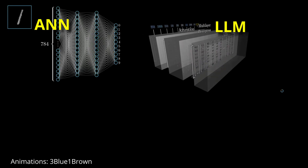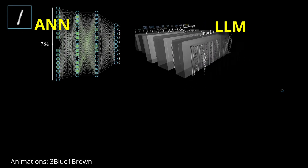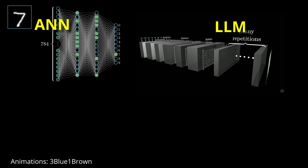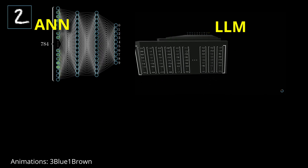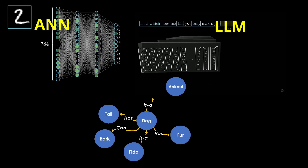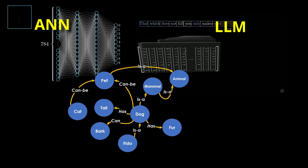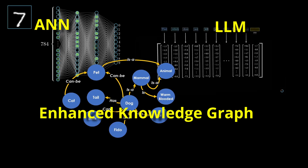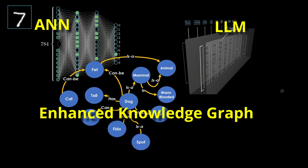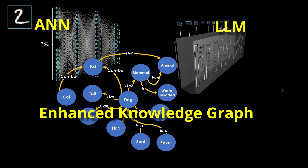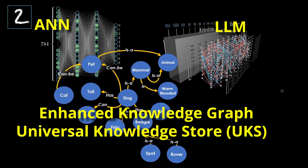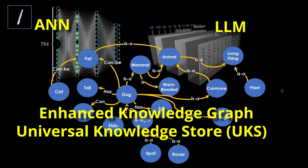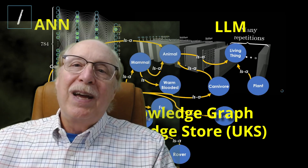There's a different approach to artificial intelligence that holds greater potential than neural networks or large language models like ChatGPT. Today, we're exploring that alternative — what I call the Enhanced Knowledge Graph. Let's dive in.